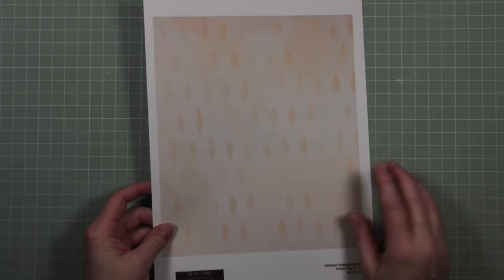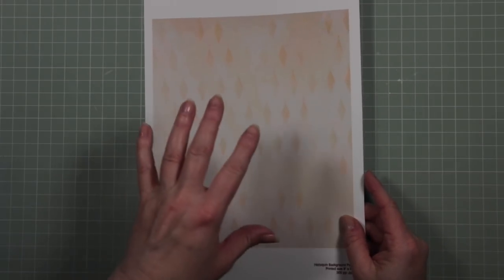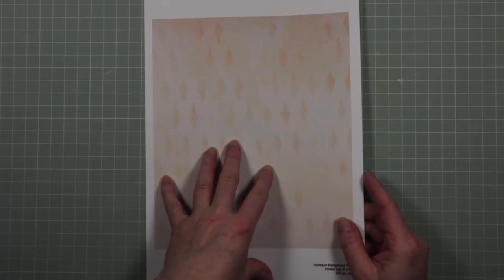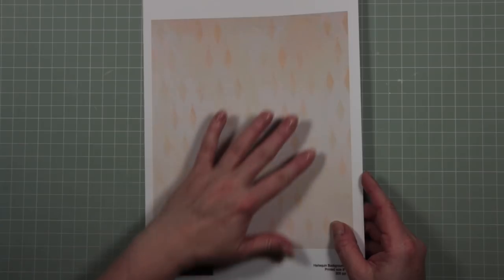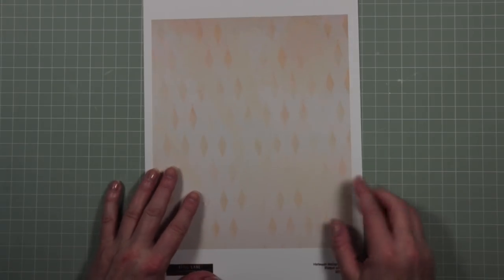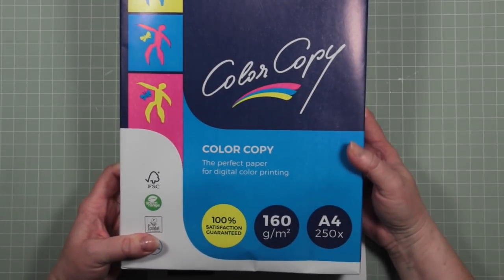I'm going to start with one of my own pages. This has been printed from a file that I've prepared that will be on my Etsy store, and it has a very soft harlequin style background. I've printed it on this type of copy paper.